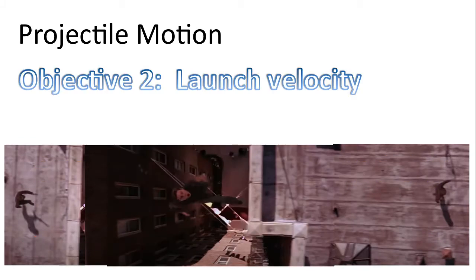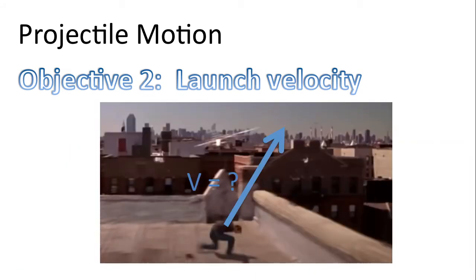Objective 2: Spider-man's launch velocity. Here's a diagram of spider-man just before he launches. And so that's our goal. We're going to have to determine the components of the velocity vector in order to get the velocity. We'll also have to determine the angle theta.